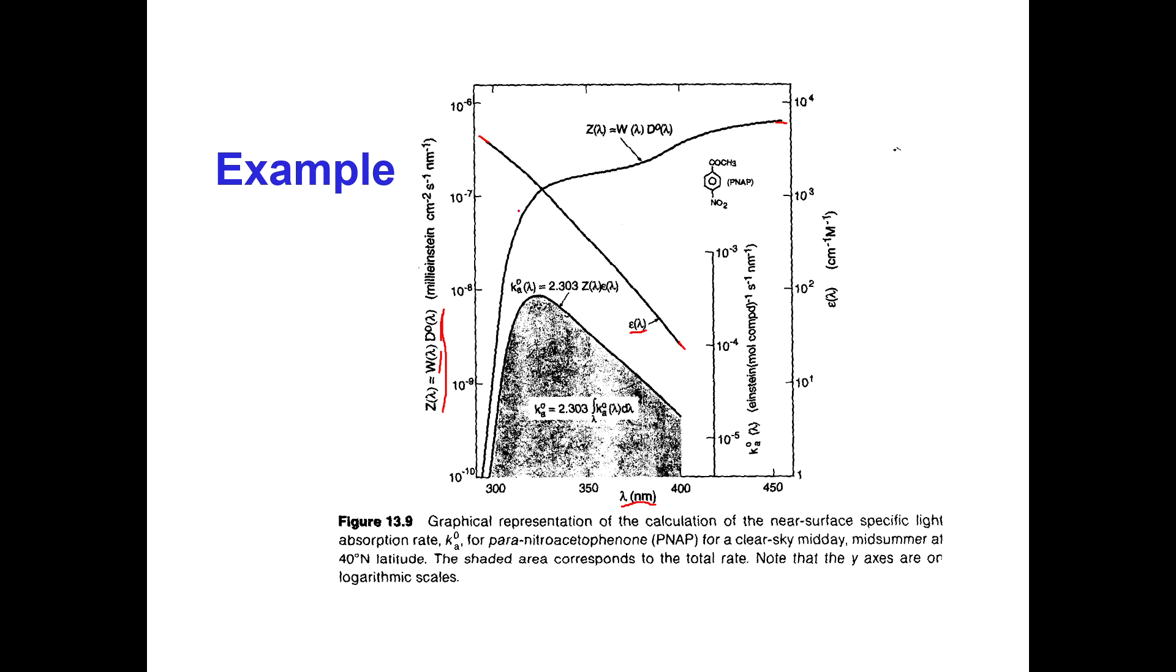Now, why does this fall off a cliff right here, and we have almost nothing below 290 nanometers that's hitting the Earth's surface? That's because of our friend, the ozone layer, right? So the sun does actually give out some shorter wavelength light, but it all gets screened out by the ozone layer. So nothing below about 290 nanometers is actually hitting the Earth's surface. So if you multiply this curve by this curve, you get the black curve here. You get the area here.